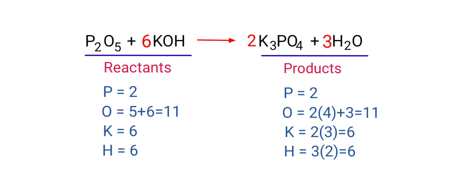The equation is now balanced. There are 2 phosphorus atoms, 11 oxygen atoms, 6 potassium atoms, and 6 hydrogen atoms on both sides.